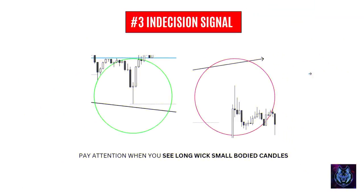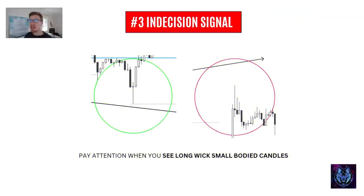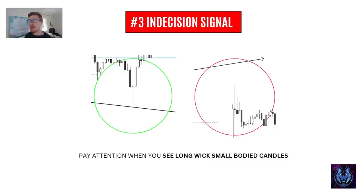Number three: indecision signal. When price reaches these swing high and swing low points, we look for indecision candles. These are strong indications of where price is finding a reversal point. Since we get these big wicks, we know liquidations are happening. We know there's an imbalance in the buyers and sellers. And these indecision candles let us know where this turning point is happening.